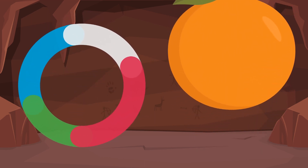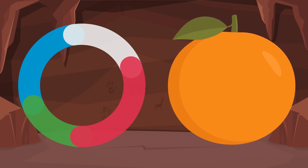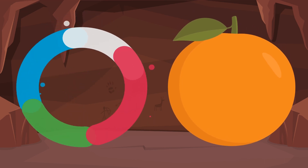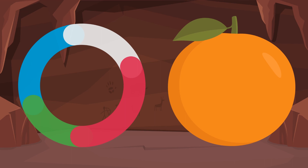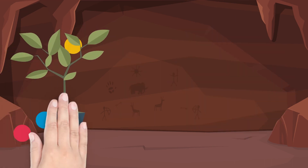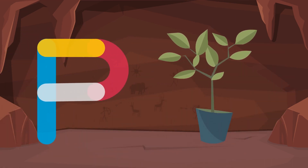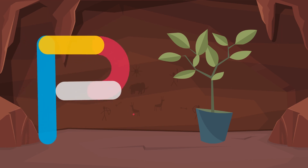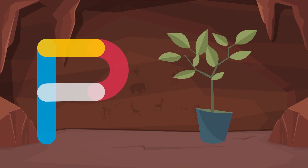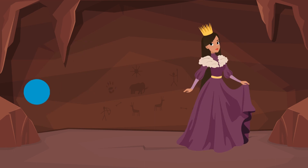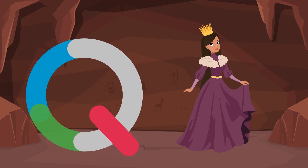O is for orange. P is for plant. Q is for queen.